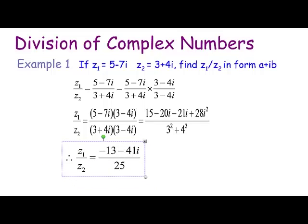Eventually we get z₁ over z₂ is equal to minus 13 over 25 minus 41 over 25i. To be precise, you would write a is equal to minus 13 over 25 and b is equal to minus 41 over 25. Thank you for watching and bye for now.